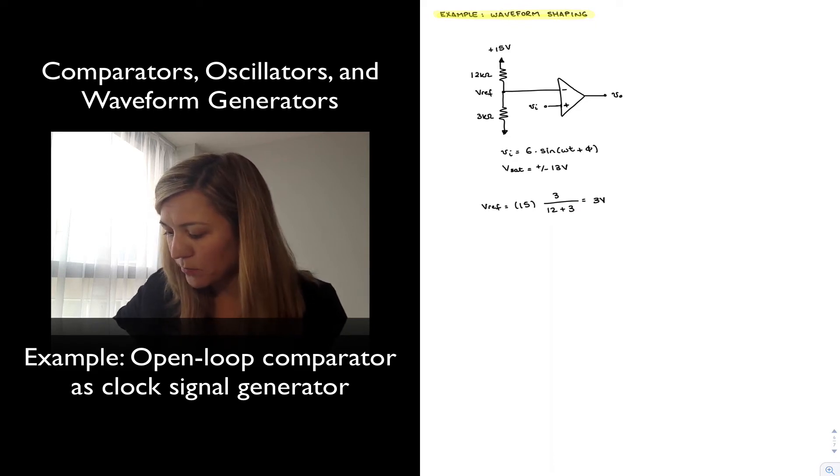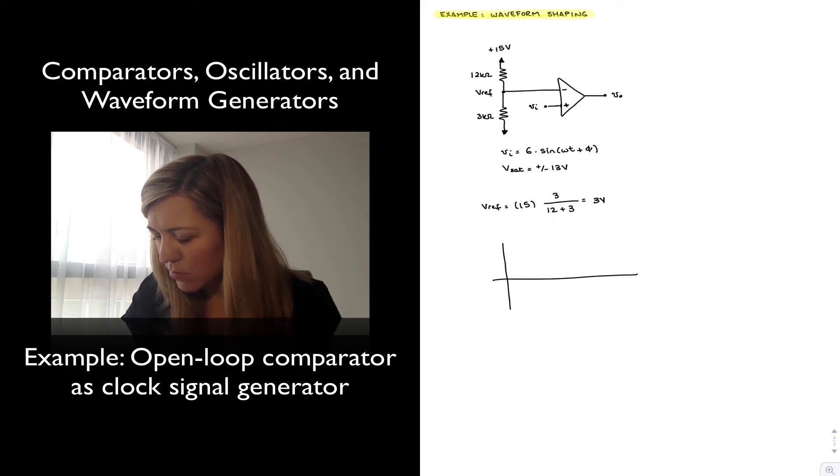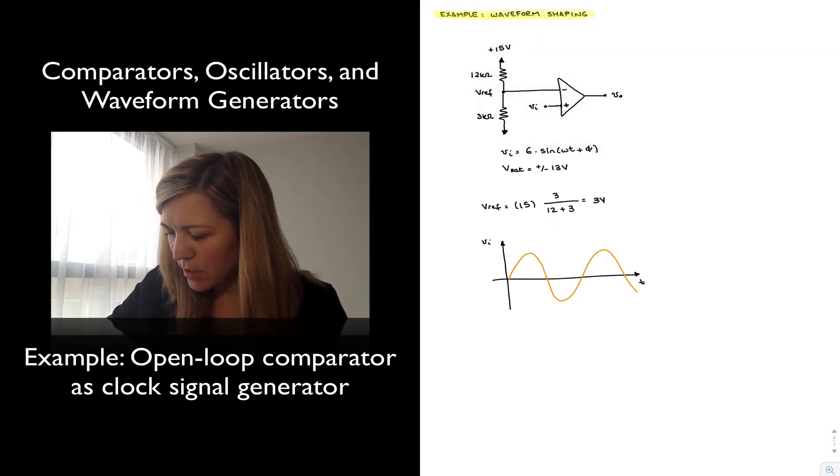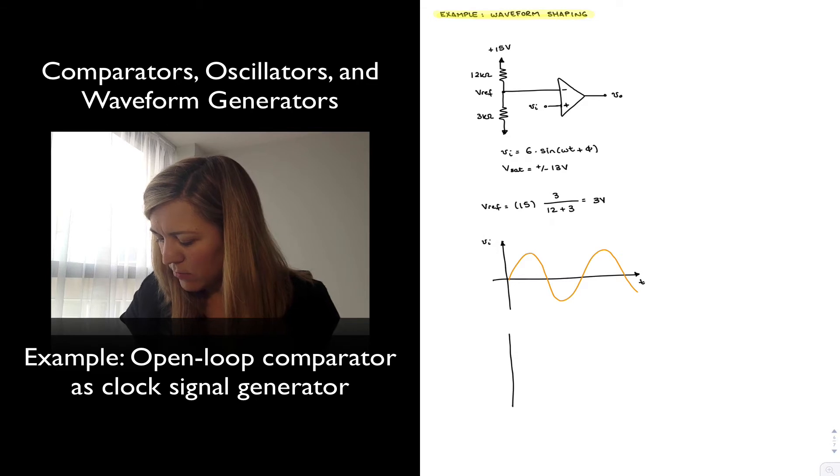In other words, if I have my input signal which is a sinusoid of amplitude 6 volts, that is v_in, I expect that my output signal v_out...